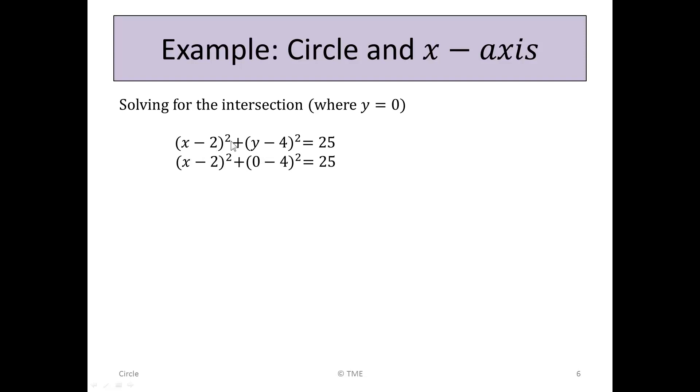So instead of (x - 2)² + (y - 4)² = 25, we have now (x - 2)² + (0 - 4)² = 25. Solving now, we get (x - 2)² + 16 = 25. Taking the 16 across, (x - 2)² = 25 - 16, or (x - 2)² = 9.